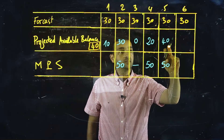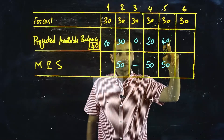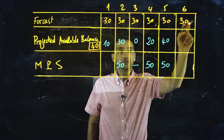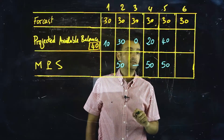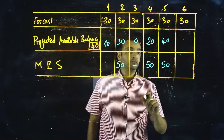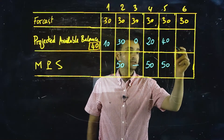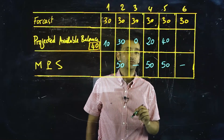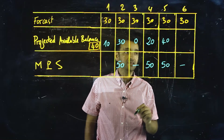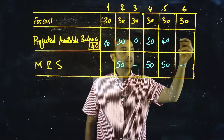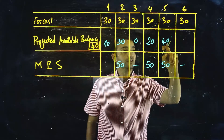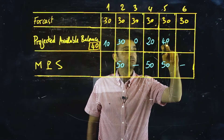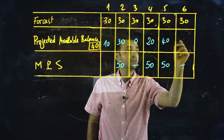40 units available can cover the last period's forecast, so we don't need to schedule an MPS, and the new value for the projected available balance will be 40 minus 30.